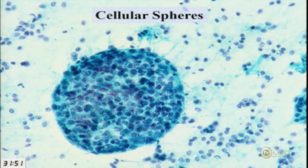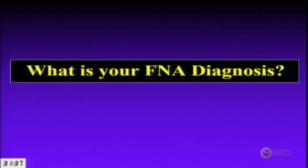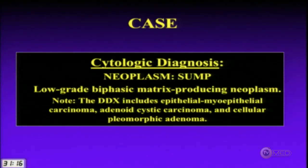We do have occasional large spheres of cells, which is one area that raises concern for adenoid cystic carcinoma. This was signed out as neoplasm, uncertain malignant potential — low-grade biphasic matrix-producing neoplasm — with a differential including epitheliomyoepithelial carcinoma, adenoid cystic carcinoma, and an unusual cellular pleomorphic adenoma.